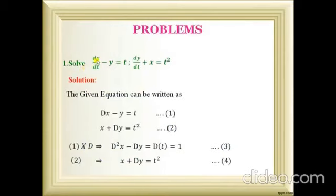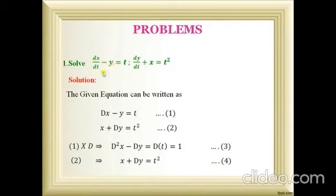The given problem is: dx/dt minus y equals t, and dy/dt plus x equals t squared. Here x and y are dependent variables and t is the independent variable. We have two dependent variables, two equations, and only one independent variable. I am now writing the derivative operator form of the given equations.